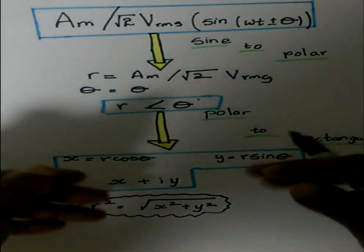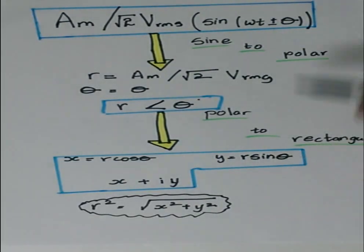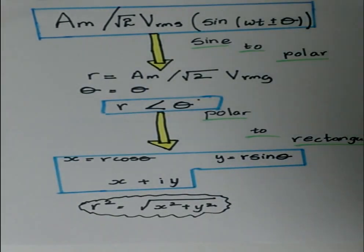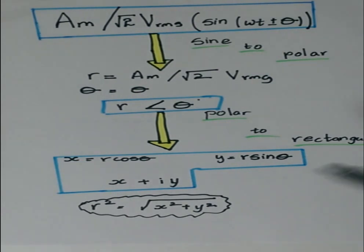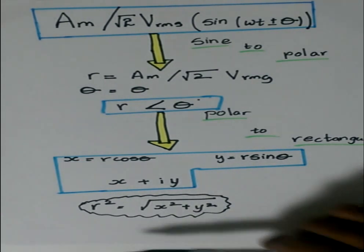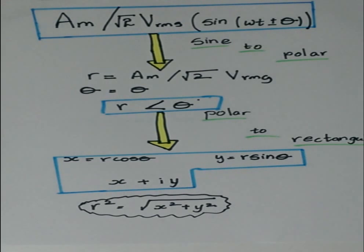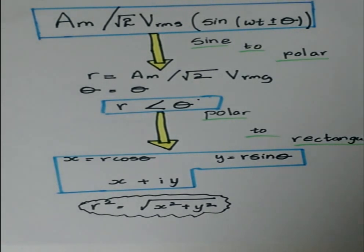You could always go through the previous steps and get from rectangular to the sine form just by going through in a reverse mechanism. The only thing you'll need to know is r squared equals x squared plus y squared, the root of it, for easy simplification. Hope you enjoyed the video. Omni Veden, thank you.